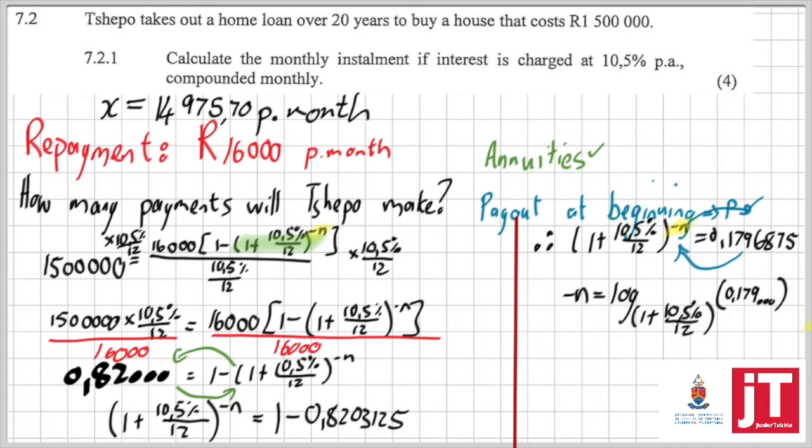If I rewrite this in logarithmic form, negative n now goes on its own, log of that base, that remains the base of 0.179. And that gives me a value for n of 197.03.